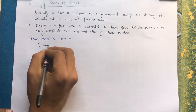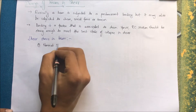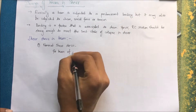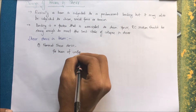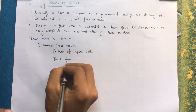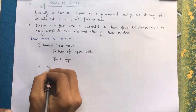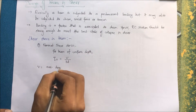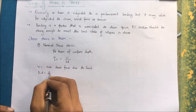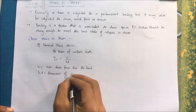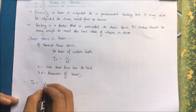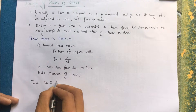The first topic is nominal shear stress. For a beam of uniform depth, shear stress τv is calculated as V divided by BD, where V is the maximum shear force due to load and B and D are the dimensions of the beam.